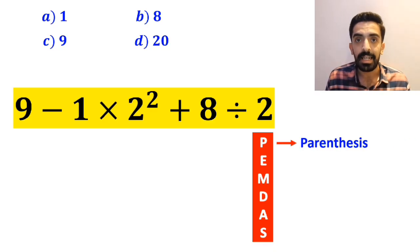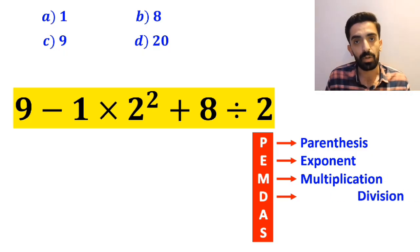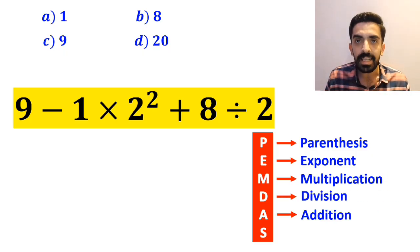In this rule, P stands for parenthesis, E stands for exponent, M stands for multiplication, D stands for division, A stands for addition, and S stands for subtraction.